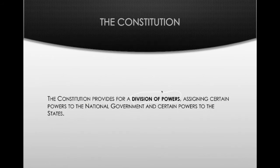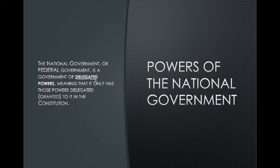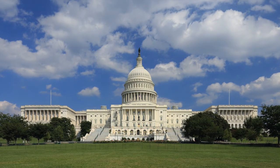The Constitution outlines certain things the national government can do, certain things that the states can do, and things that are specifically denied. With the national government, these are called delegated powers. Delegated means the Constitution literally spells out specific things the federal government can do — it delegates those powers to them. Just like if you delegate a chore to a younger sibling, you're giving that specific responsibility to them.